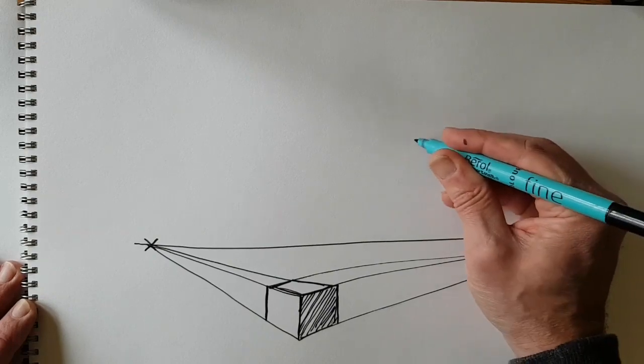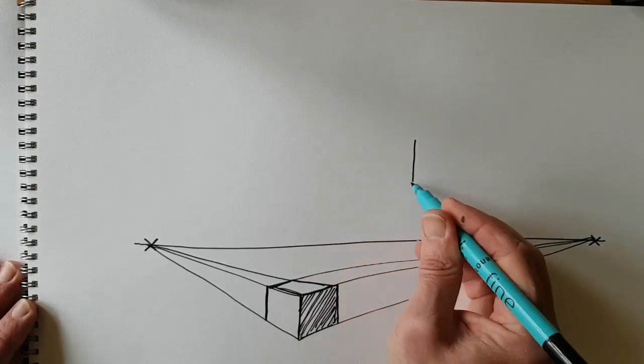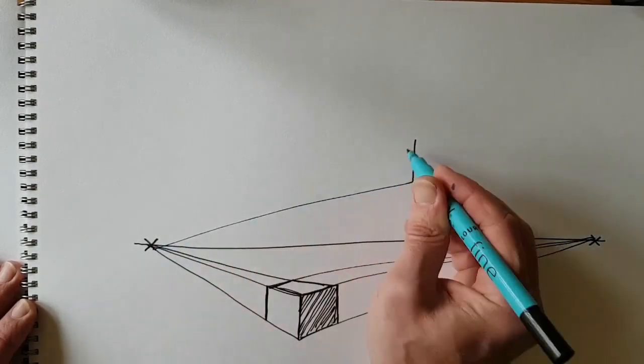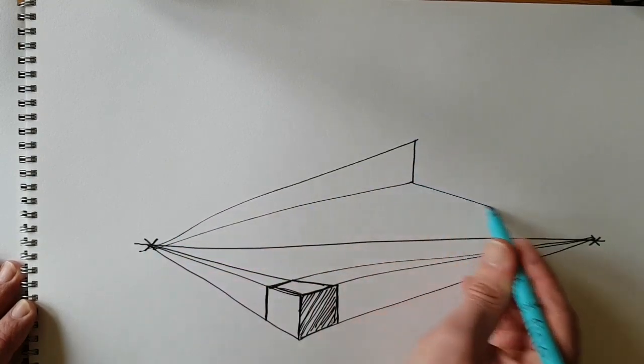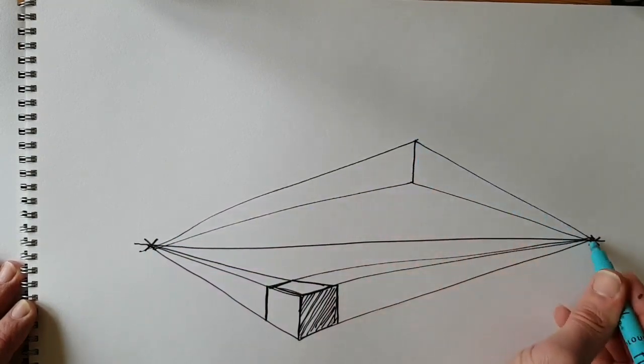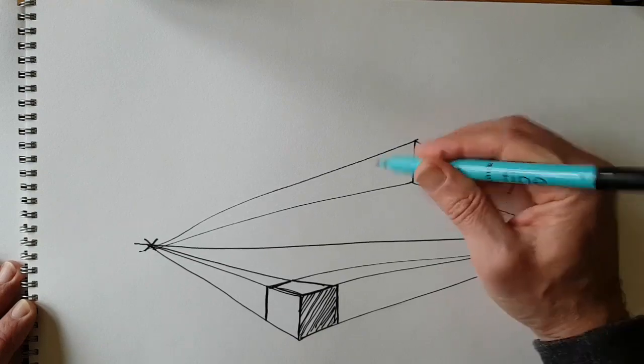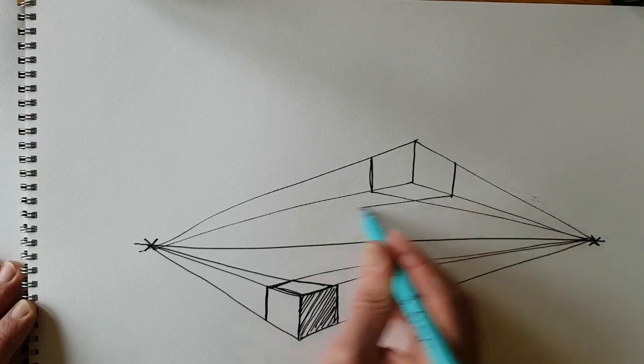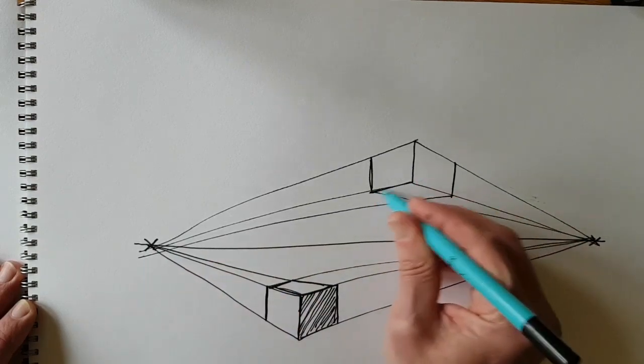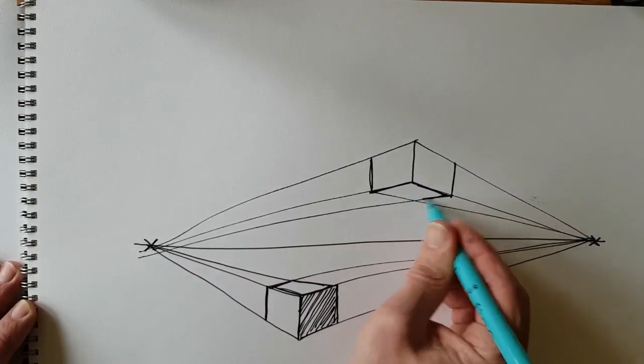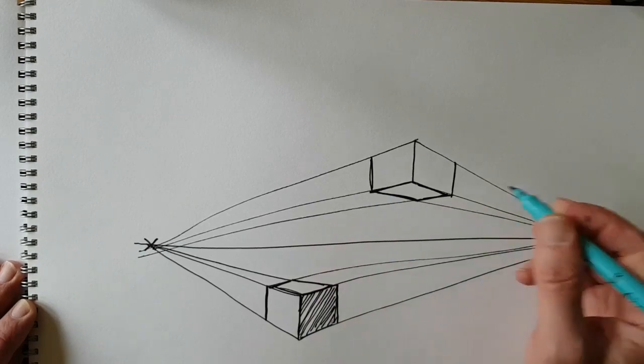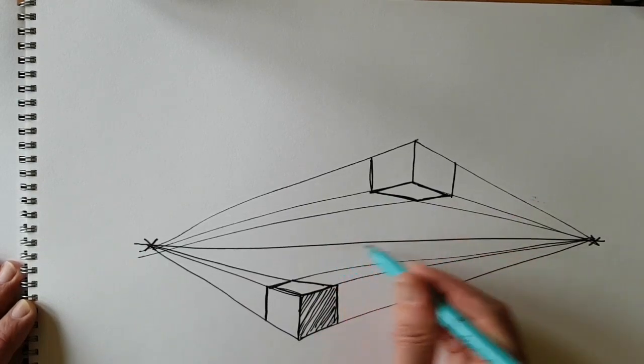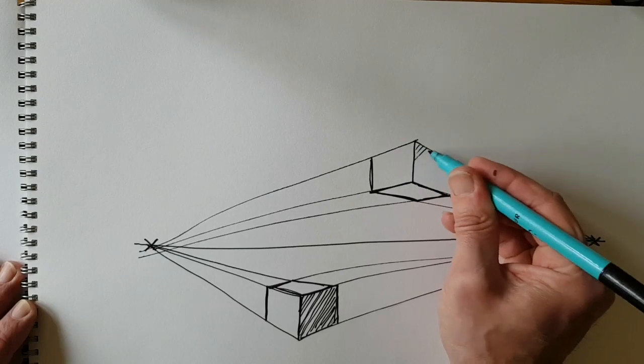If I was going to do another box this one is above the eye line. There we go you can see the base of the box the bottom of the box because it's above the eye line so I'm looking up at it.